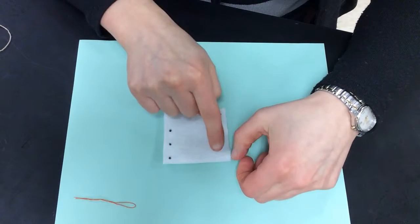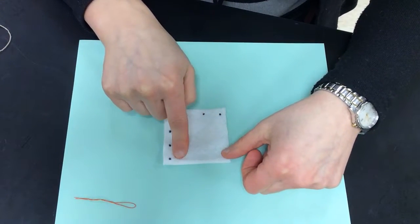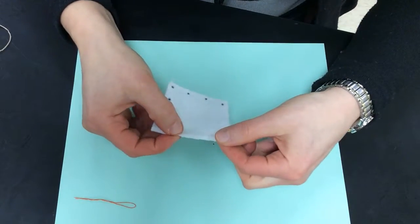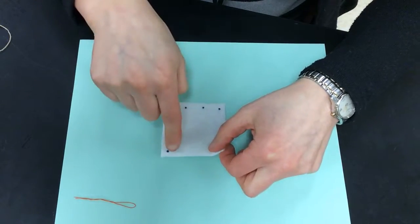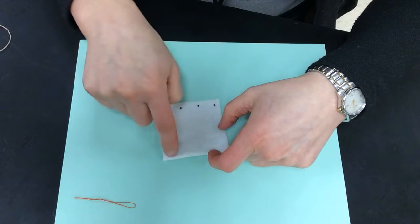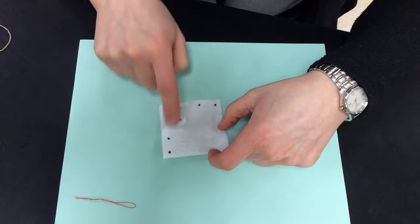I do not have to sew this side because it's already folded. It's attached, so I don't need to sew that unless you want to sew this just for looks so that you have stitching all the way around.